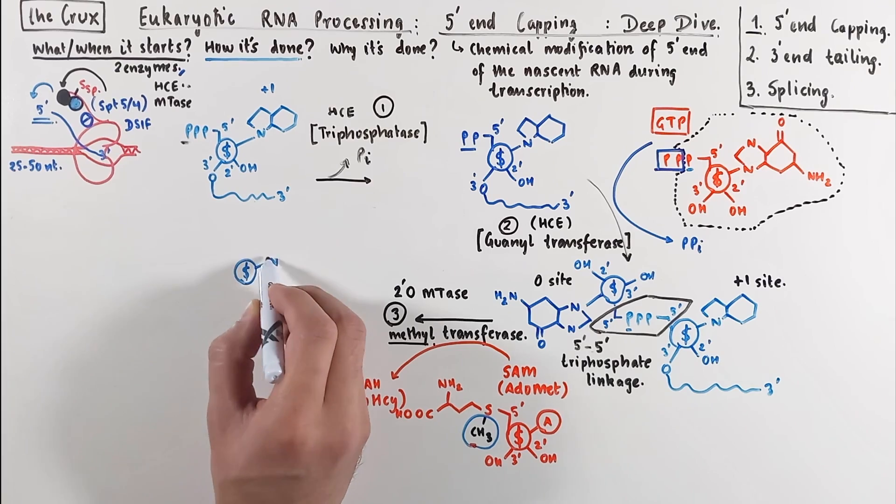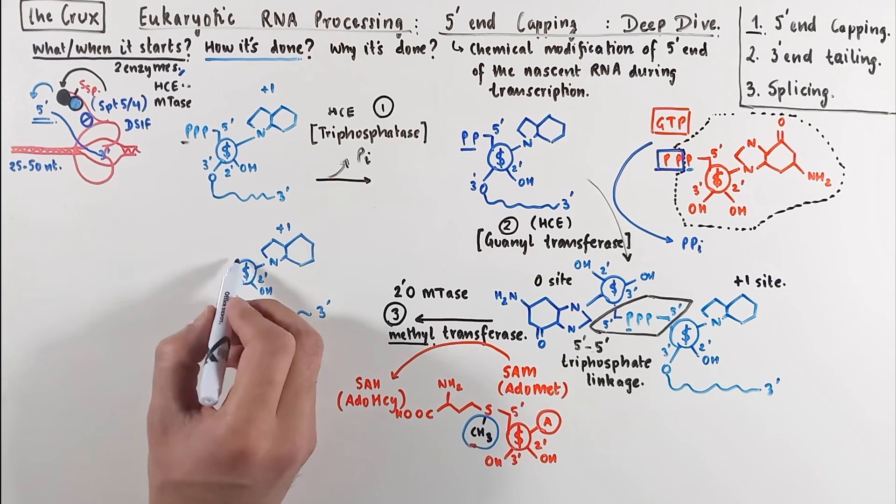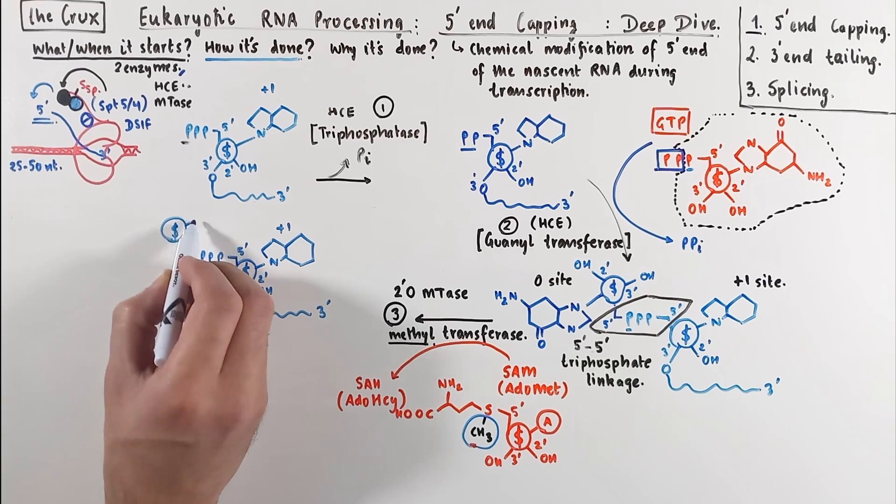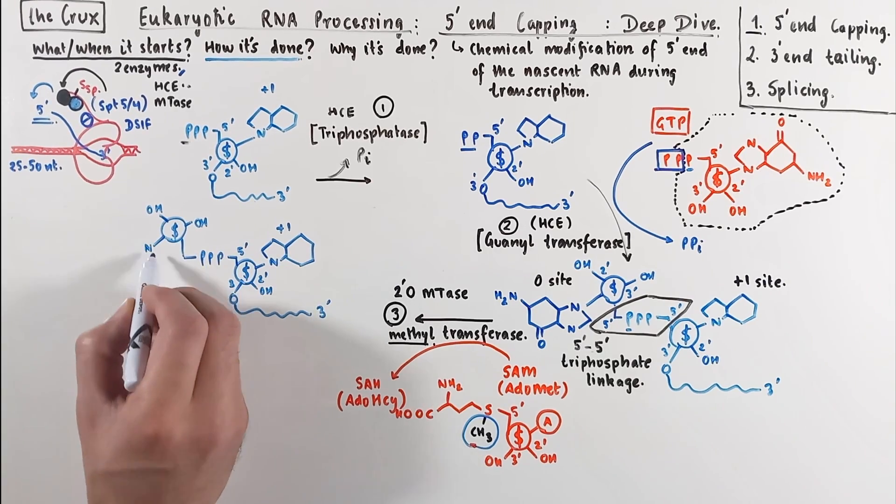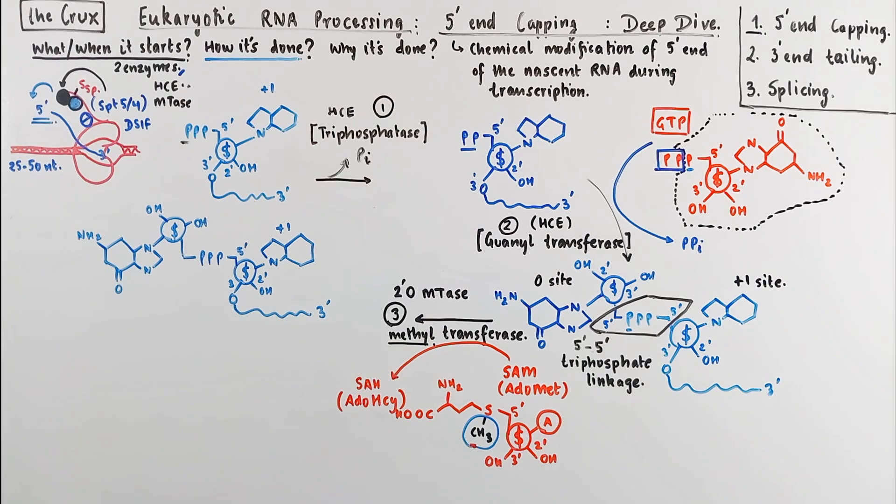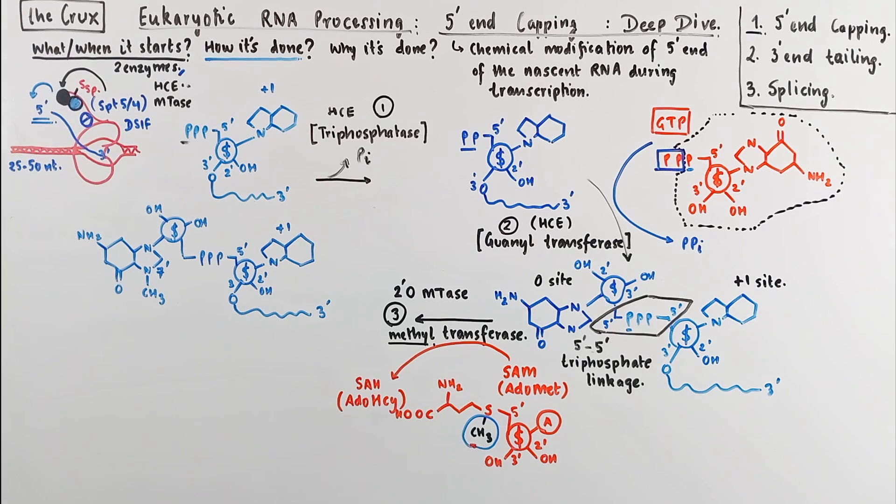Starting with the plus 1 site of the RNA, which remains unchanged, but from step 2 as we saw that it is now linked to a guanosine phosphate with this 5 to 5 triphosphate linkage. But following this step of methyl transfer, it is the nitrogen in the position 7 of the guanine that gets the methyl group. And that's the methylation of site 0 that completes the cap.